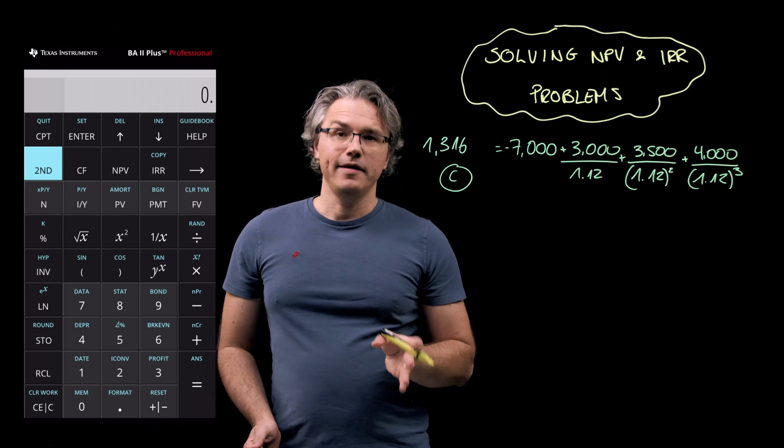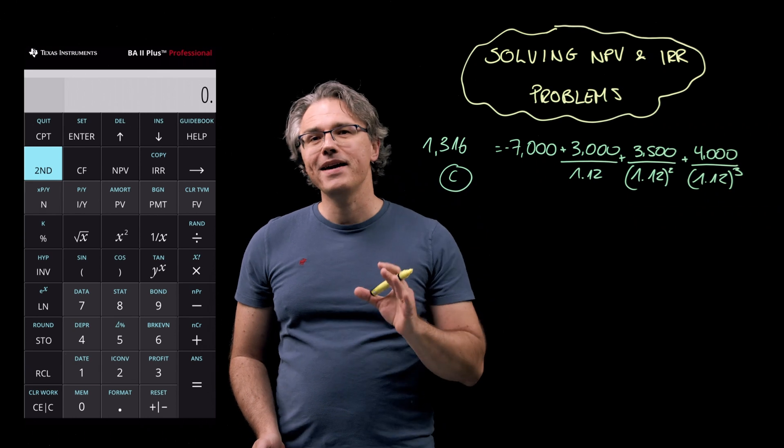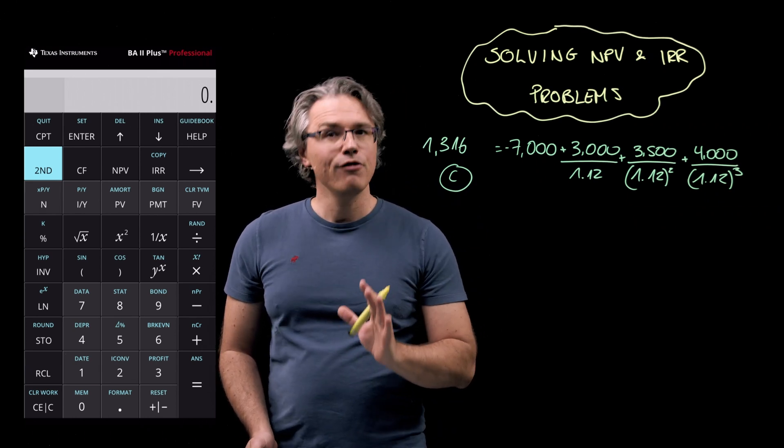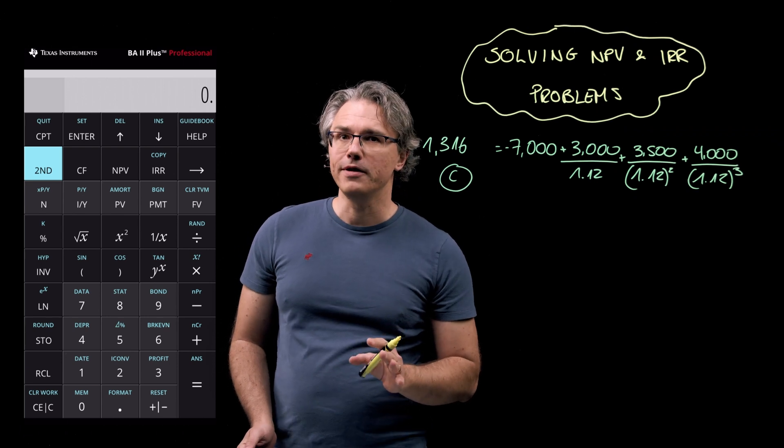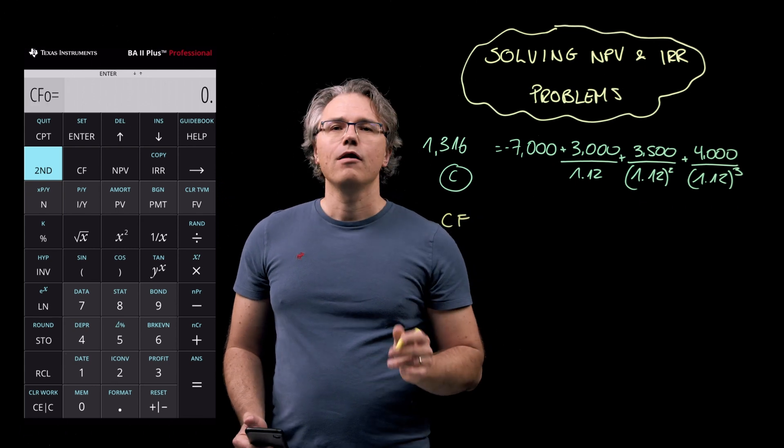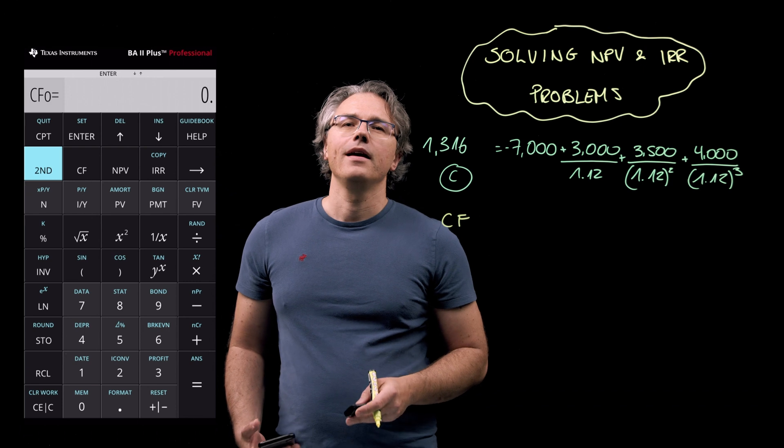So let's try the other method, that is using the cash flow worksheet on your calculator. This may take just a few seconds longer, but it gives you a lot more control over what you are doing. You access the worksheet by pressing the CF key, which is sitting right next door to the second key.